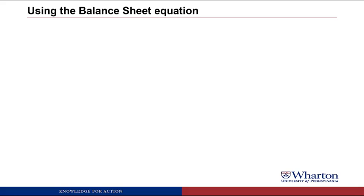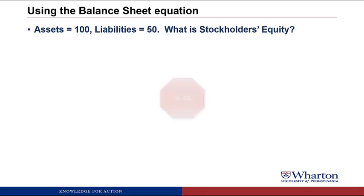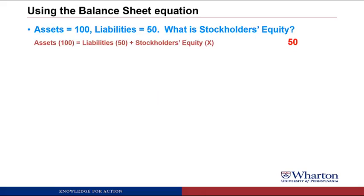Here's the first one. Assets equal 100, liabilities equal 50 — what is stockholders' equity? We can solve this with the balance sheet equation. We know assets are 100 and liabilities are 50, so the only thing missing is stockholders' equity, which has to be 50, so that we have 100 on the left-hand side and 100 on the right-hand side.